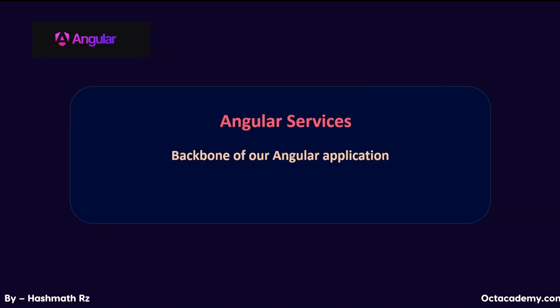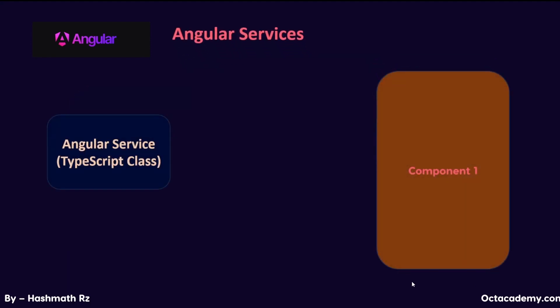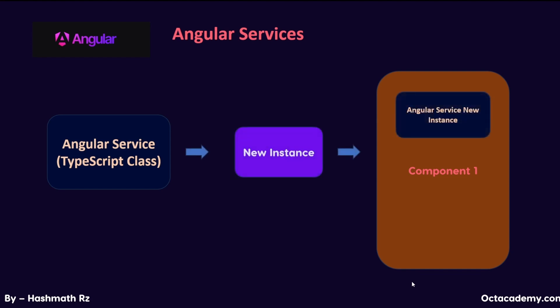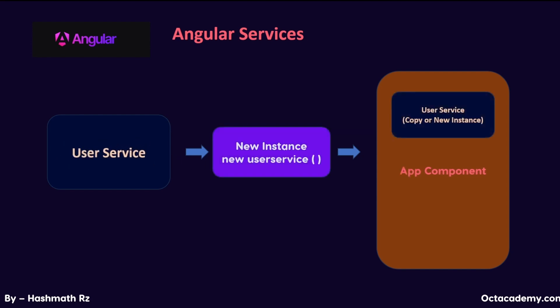This Angular service is a simple TypeScript class. In order to access or trigger a class, we have to create a new instance of it. A new instance essentially duplicates that class within the current class. For example, in order to access the UserService class inside the AppComponent class, we bring an exact version of the UserService class into the AppComponent — this is what creating a new instance does.